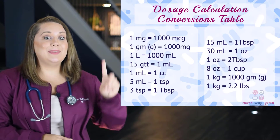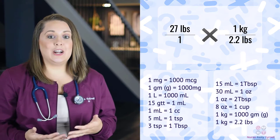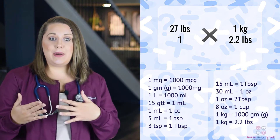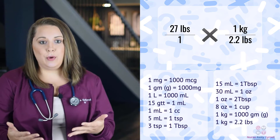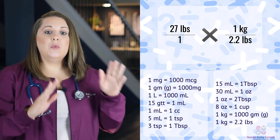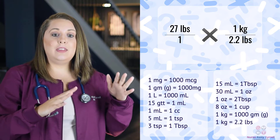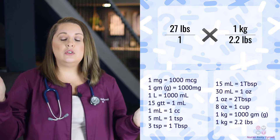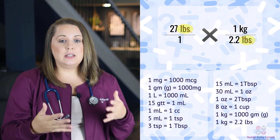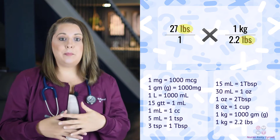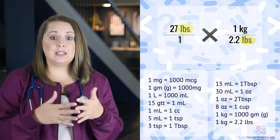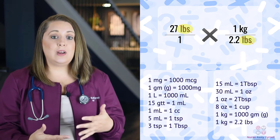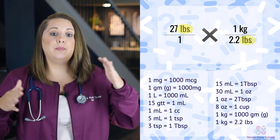Using dimensional analysis, our problem would look something like this. The formula we're using is patient weight over 1, then we multiply it by the given unit of measurement from the metric table. This step is really important: you want to make sure that the unit from the metric table on the bottom of the second half of the equation matches the unit on the top of the first part of the equation, so the two units cancel each other out. See here how I have pounds on the top in the first part and pounds diagonally on the bottom in the second part — we do this so the units cancel out, leaving our desired unit, kilograms. Think dimensional and diagonal — they both start with D.